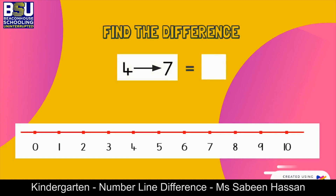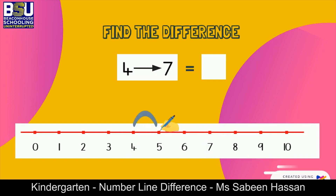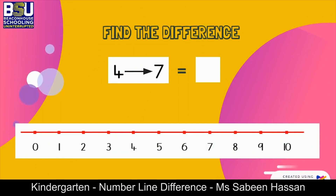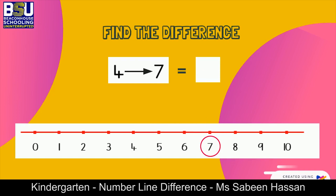For that, we need to stand upon number four and have to reach to number seven while taking jumps one at a time. Children, you must have seen that we have to take three jumps in order to reach number seven. When we start from number four: the first jump was from four to five, the second from five to six, and the third from six to seven.